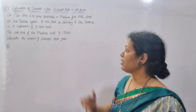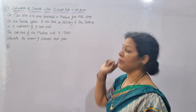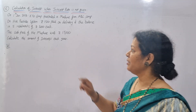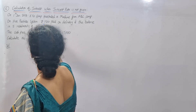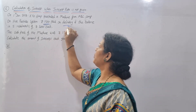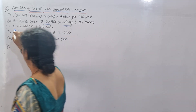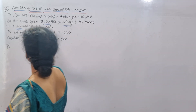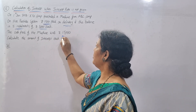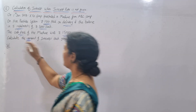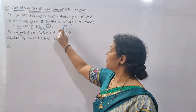On 1st January 2018, XYZ Company purchased a machine from ABC Company on the hire purchase system. ₹1,500 was paid on delivery — that is the down payment — and the balance in five installments of ₹3,000 each. The cash price of the machine is ₹15,000. We need to calculate the amount of interest for each year — that is, five years.